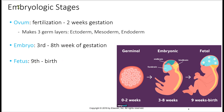We have three embryonic stages based on time. The ovum stage starts from fertilization up to two weeks. Within the ovum, once it starts, there will be three germ layers — these are the main germ layers that will form the body, all of the things inside of the body from just three layers: the ectoderm, mesoderm, and endoderm.